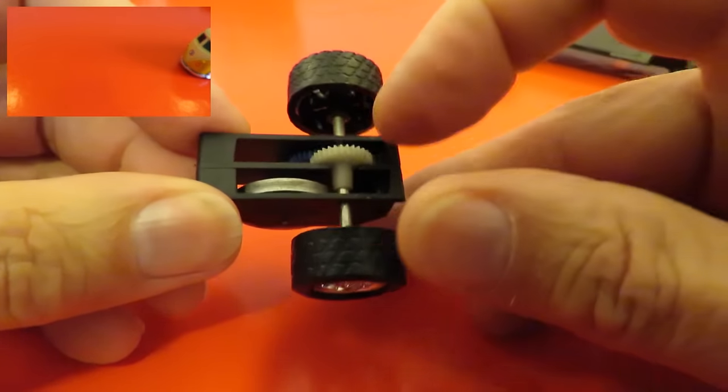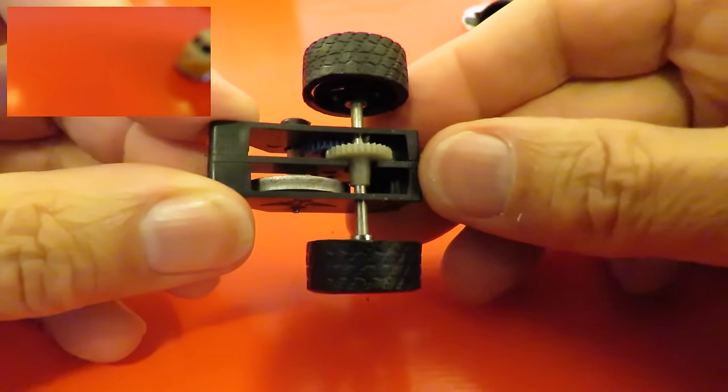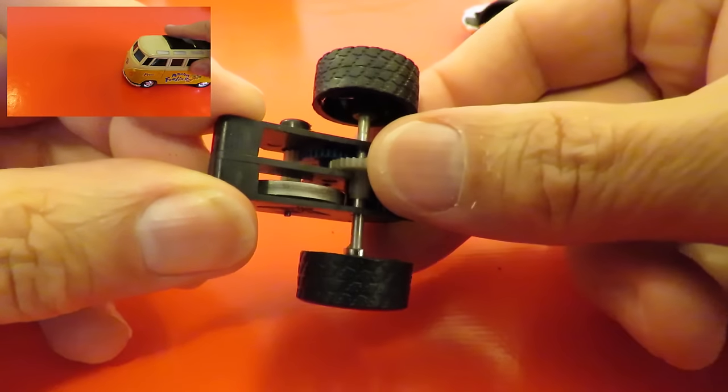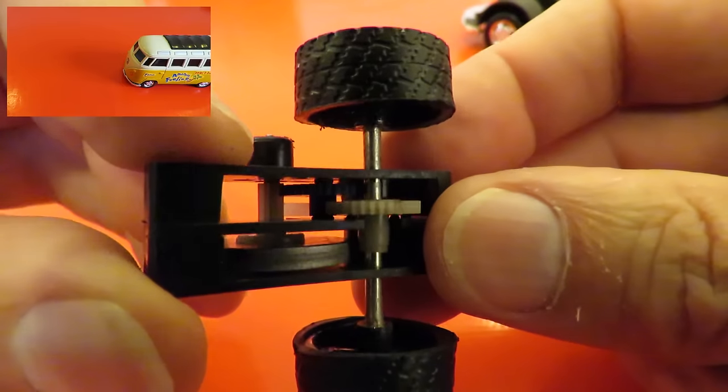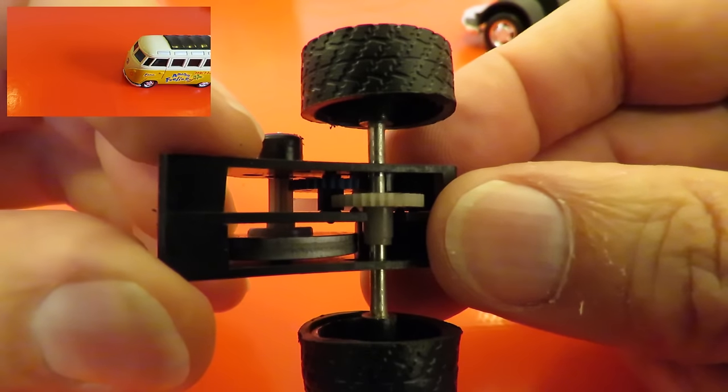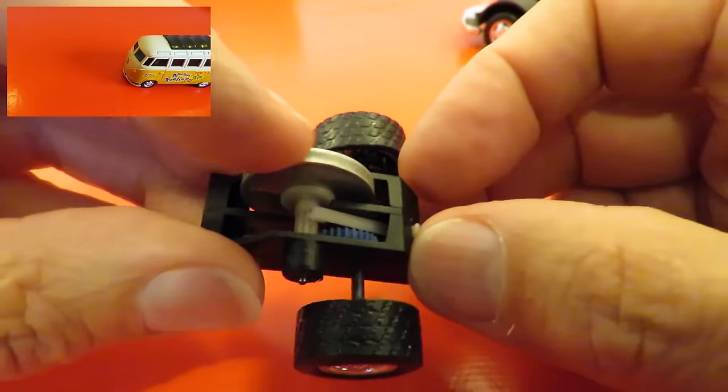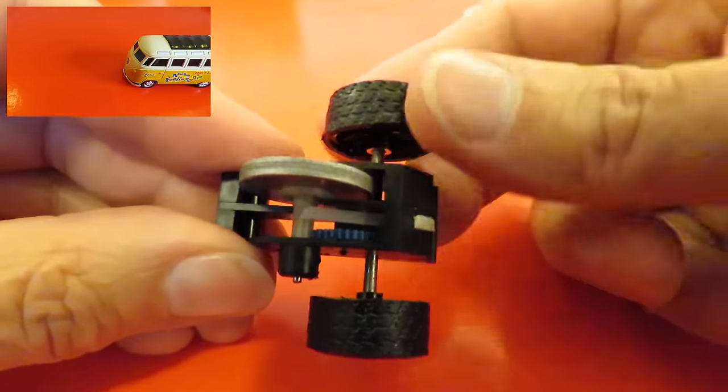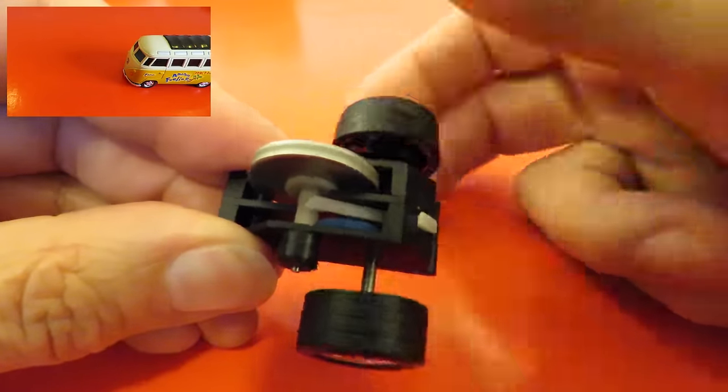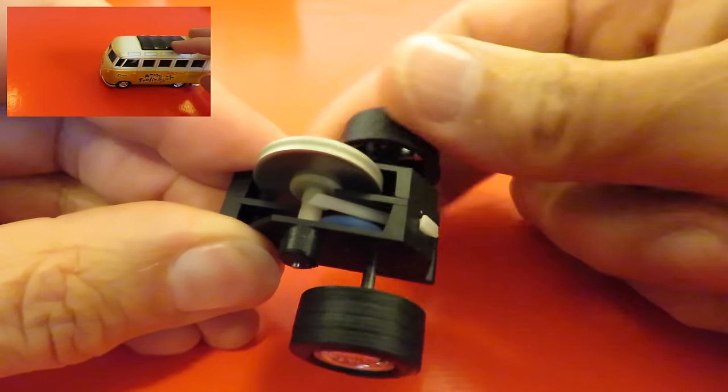It's very simple. There's a gear on the back axle that drives another gear in there, that then drives the shaft that the flywheel is attached to, so that you build up momentum by pushing the car forwards.